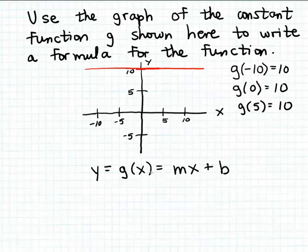All we have to do to write down the formula for this constant linear function is fill in the value for the slope and the value for the y-intercept. Because this line is a horizontal line, its slope is going to be zero. Horizontal lines always have a slope of zero, so it's very easy to fill in the slope — it's going to be zero.